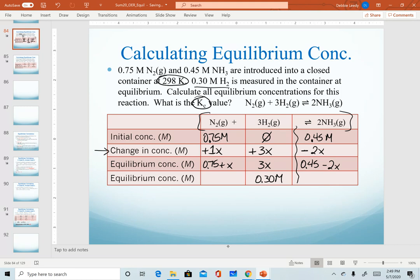The last key thing to solving this problem is to recognize that our bottom two rows are equal. There are two ways of describing the same thing. The first describes equilibrium concentrations based on initial and change. The last one is my final actual quantity once I know my x value. What that means is I can use these two quantities from hydrogen and set those equal to each other.